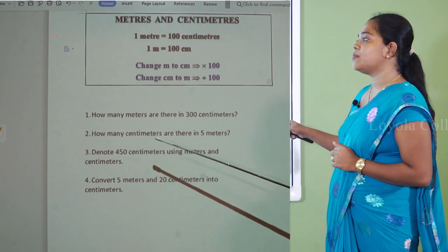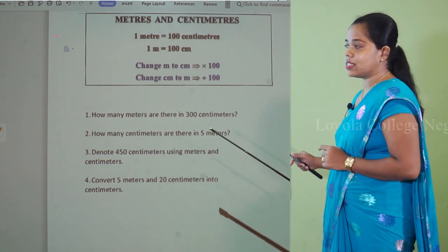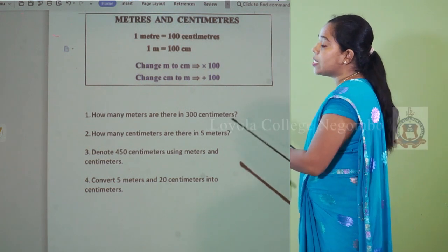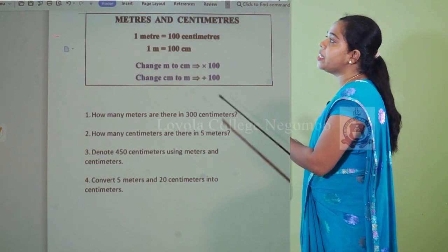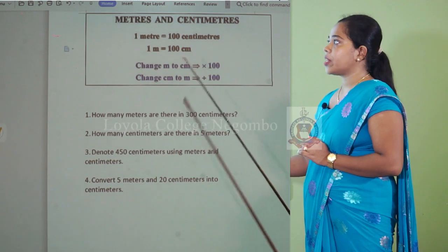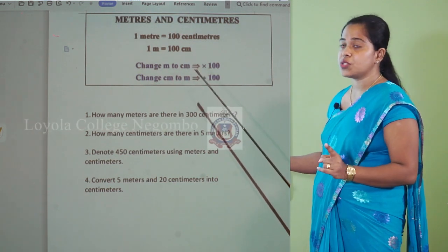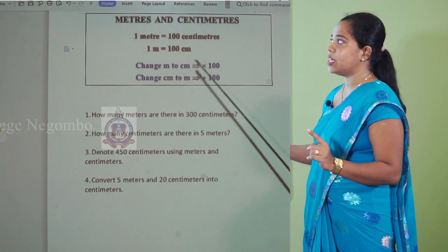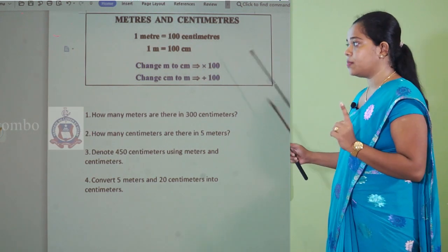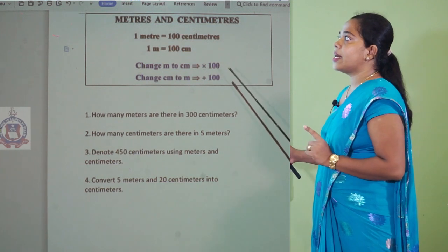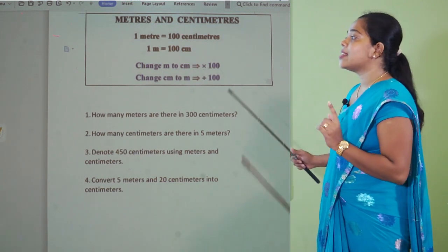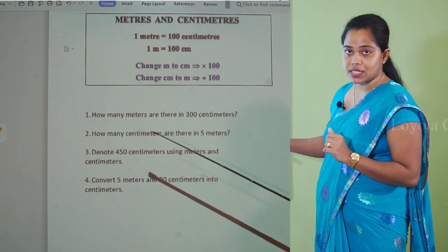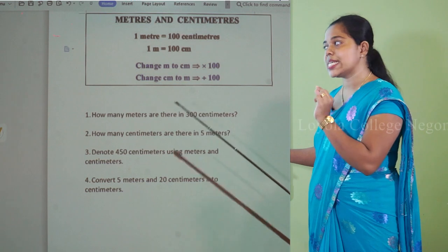Second one: How many centimeters are there in 5 meters? They are asking you to convert 5 meters into centimeters. You must multiply the given number of meters by 100. 5 multiplied by 100 is 500 centimeters.